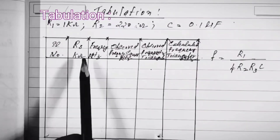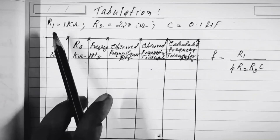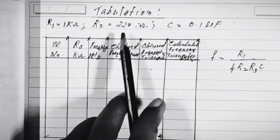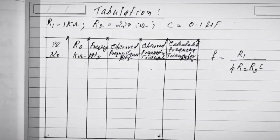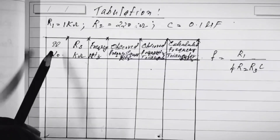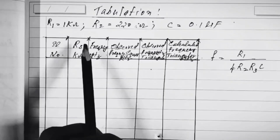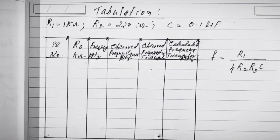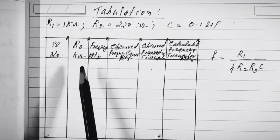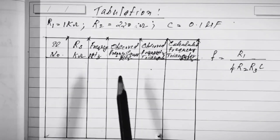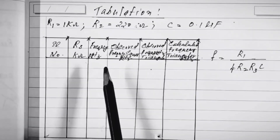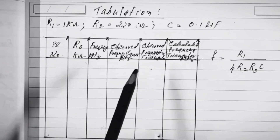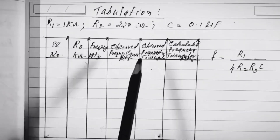Next, we go to tabulation. Throughout the experiment, the values of R1, R2, and C are kept the same: R1 = 1 kΩ, R2 = 220 Ω, C = 0.1 µF. The tabular column has: serial number, value of R3 for the assumed frequency, the assumed frequency in the third column, and the fourth column records the observed frequency of the square wave — which is the output of A1, acting as a comparator. You can read the observed frequency directly from the DSO, or calculate it from the CRO time period.